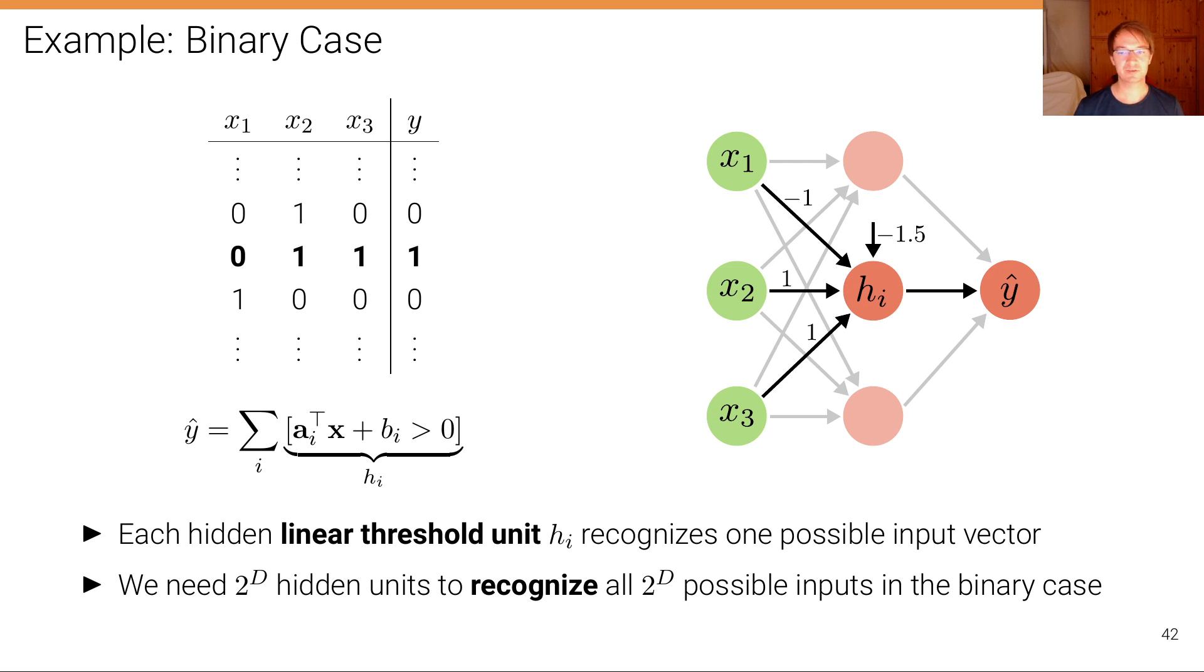So here we have an example where we have a three-dimensional input x1, x2, x3, so there's eight possible combinations. In this table I've just drawn three of them, but there's eight and a one-dimensional output y.